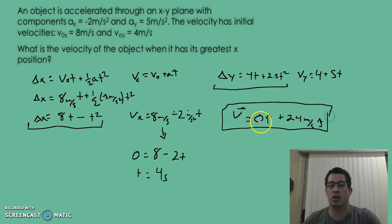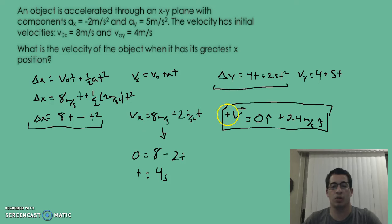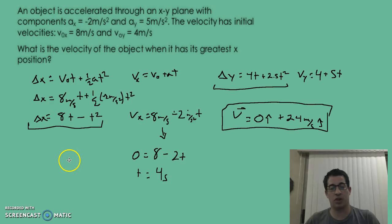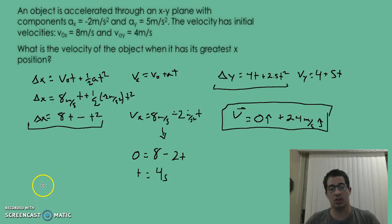The horizontal velocity was zero at the moment of greatest horizontal position — it was turning around there. This is a really high-level question, and it's okay if you're a little bit confused. Two-dimensional motion is tricky and confusing — it's probably the hardest thing covered all year.